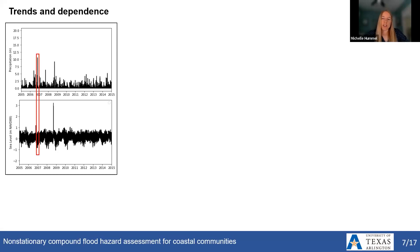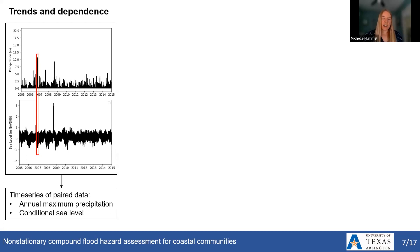The first focus of our framework is quantifying the trends in and the dependence between sea level and rainfall along the U.S. coastlines. We select sea level to represent the coastal influence and rainfall to represent the potential fluvial and pluvial influences. We selected 32 coastal locations along the U.S. shoreline that have at least 30 years of coincident precipitation and sea level observation data. At each location, we extract annual maximum precipitation time series from daily precipitation data and then find the corresponding maximum sea level that occurs within plus or minus one day of that maximum precipitation event, resulting in a time series of paired annual maximum precipitation and conditional sea level data.